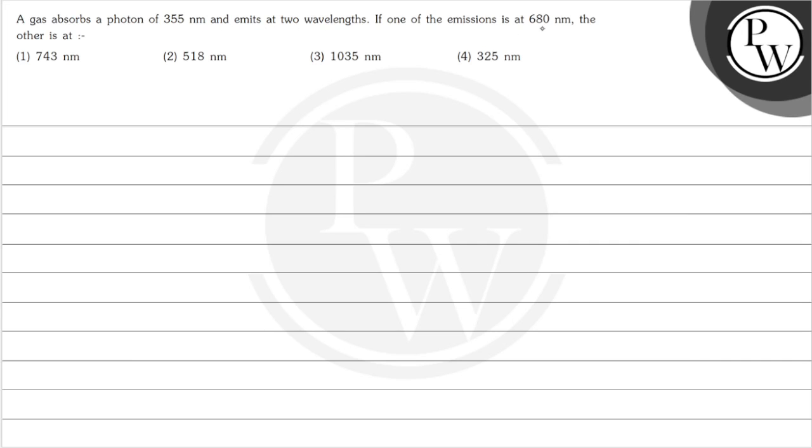If one of the emission is at 680 nanometer, then the other is at, and we have four options. Those are 743 nanometer, 580 nanometer, 1035 nanometer and 325 nanometer.